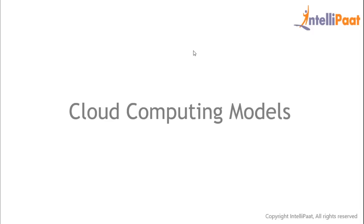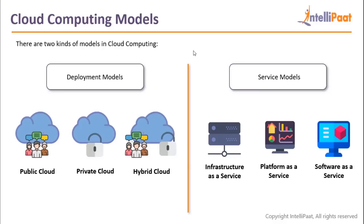Now let's talk about cloud computing models. Cloud computing is divided into two kinds of models: the deployment model and the service model. The way you can deploy on cloud has three options, and the way you can access services on cloud also has three options. For deployment: public cloud, private cloud, or hybrid cloud. For services: infrastructure as a service, platform as a service, or software as a service. Let's understand each one by one.